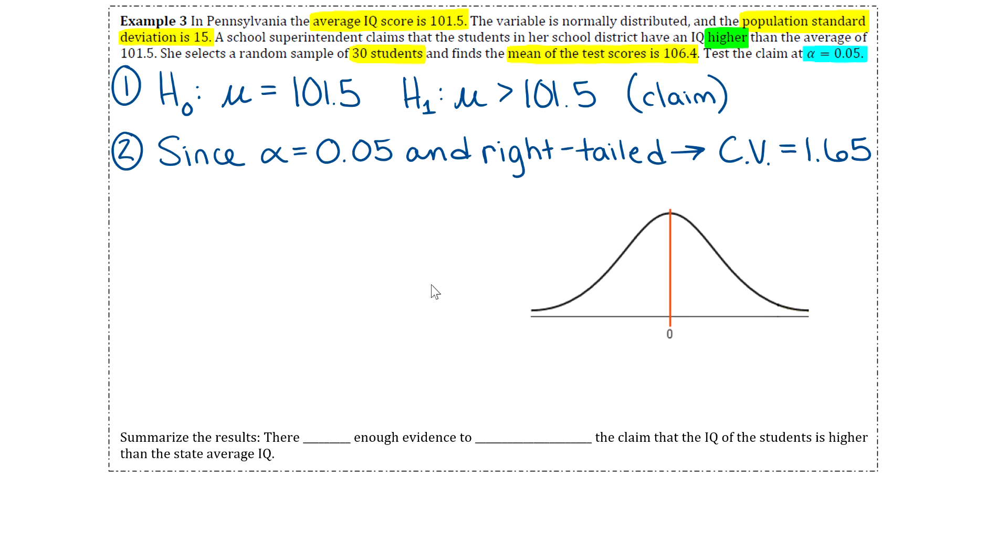Step three says to compute the test value. We're going to use that formula we just wrote down. So z equals x bar minus mu all over sigma divided by the square root of n. X bar is the sample mean. The mean from that sample of 30 students was 106.4. Then we subtract mu, which was 101.5. Then you divide by this population standard deviation, which is 15, and divide that by the square root of n. We'll divide that by the square root of 30 since there were 30 students in the sample.